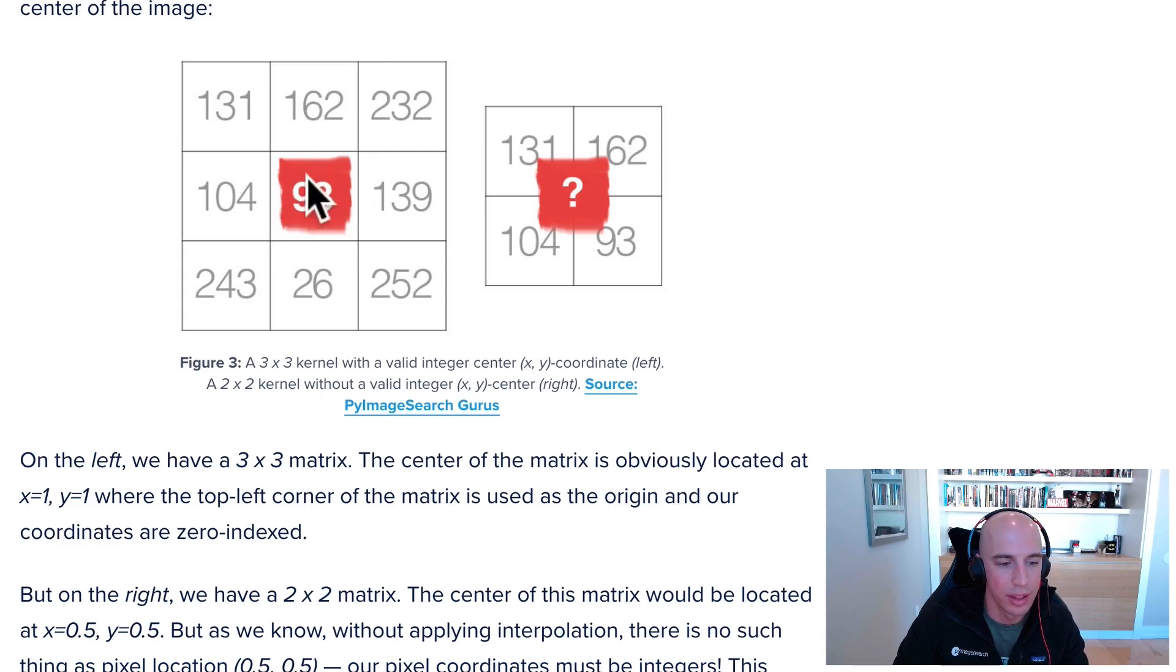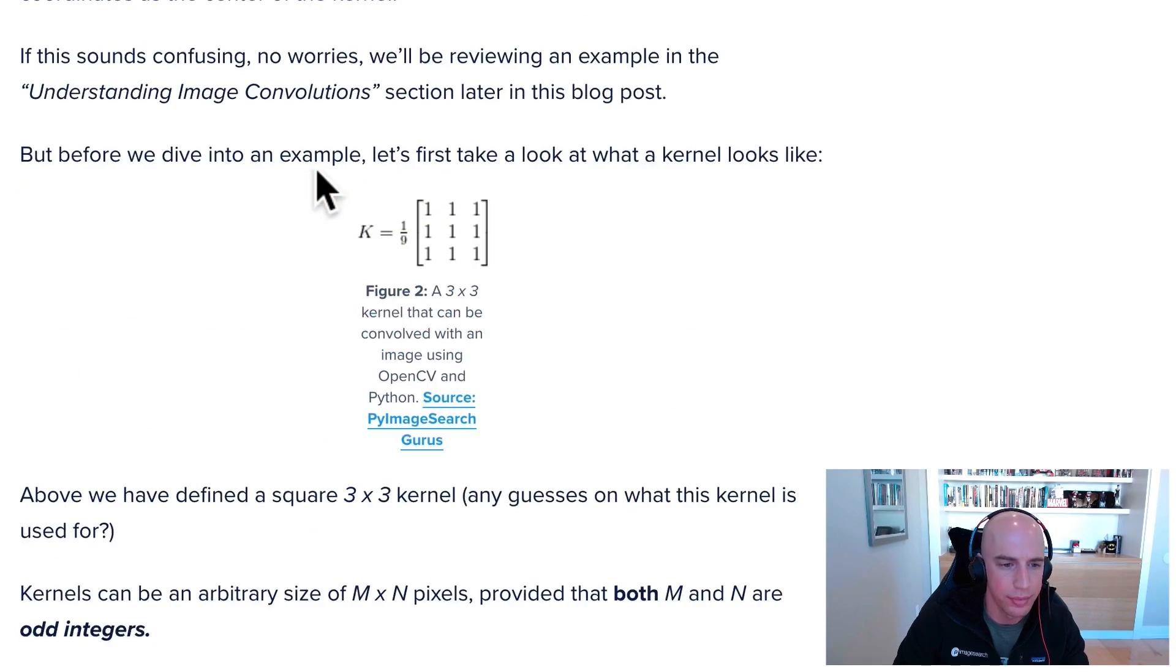You want to be able to have the center value. In terms of what a kernel actually looks like, here is an example of a kernel used for average blurring. We have the matrix initialized with all ones—there's nine of them, it's a three by three matrix.